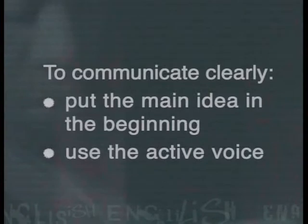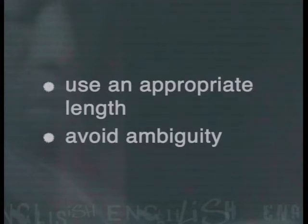This lesson has been about techniques for communicating clearly. Let's recap these techniques: to communicate clearly, put the main idea in the beginning of the sentence, use the active voice, use an appropriate length of sentence, and avoid ambiguity. We've come to the end of our lessons on sentences. In this series, we've learned how important it is to communicate clearly and to make your writing informative, interesting, and grammatically correct. That's all we have time for — keep reading, keep practicing. Thank you for joining me and goodbye.